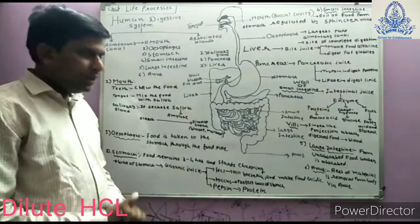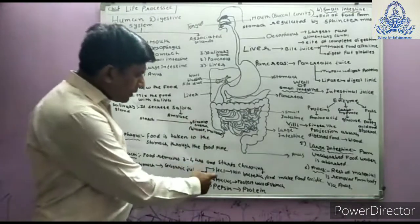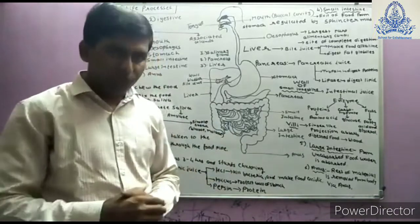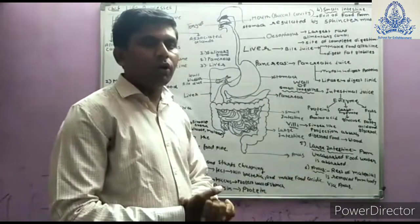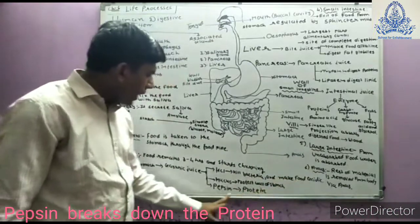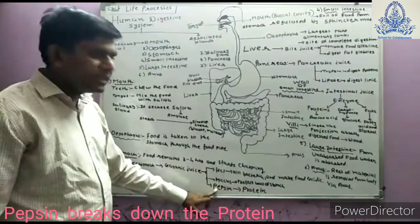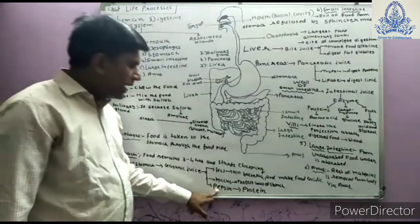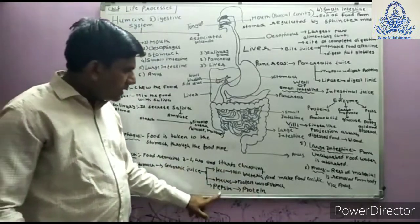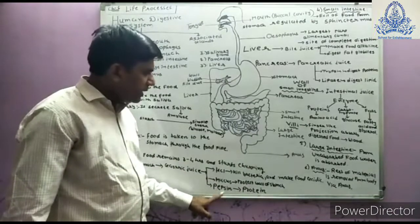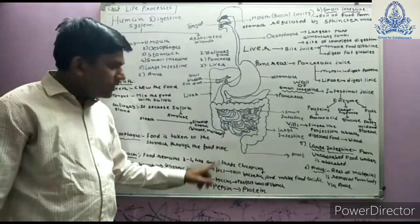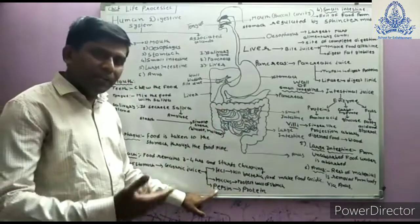Dilute HCl has two functions: it kills bacteria and other microorganisms that enter the stomach along with food, and it also provides an acidic medium in the stomach. This acidic medium is very essential for the action of pepsin. Pepsin is an enzyme responsible for the digestion of protein, so protein is first digested in the stomach. For the activation of pepsin, an acidic environment is essential, and this is created by HCl.